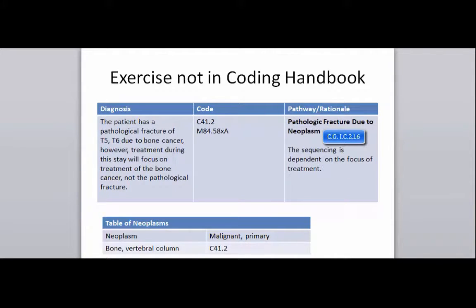Here's another example — the same scenario, however this time the focus is on the bone cancer, not the fracture. So all we do is invert our codes: now our cancer diagnosis is our primary code and the vertebrae fracture, the M84.58 code, is the secondary code in this case.